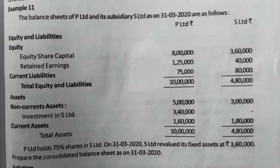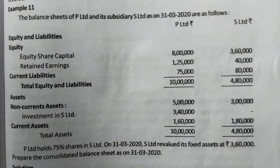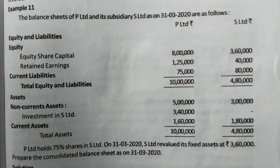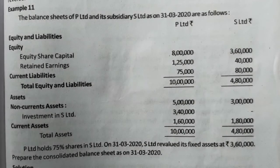The question is: the balance sheets of P Limited and its subsidiary S Limited as on 31st March 2020 are as follows. Equity share capital of P Limited is $8,00,000 and S Limited is $3,60,000. After retained earnings, total liabilities are $10,00,000 and $4,80,000. Non-current assets are $5,00,000 and $3,00,000. Investment in S Limited — purchase consideration — is $3,40,000. Current assets: $1,60,000 and $1,80,000.